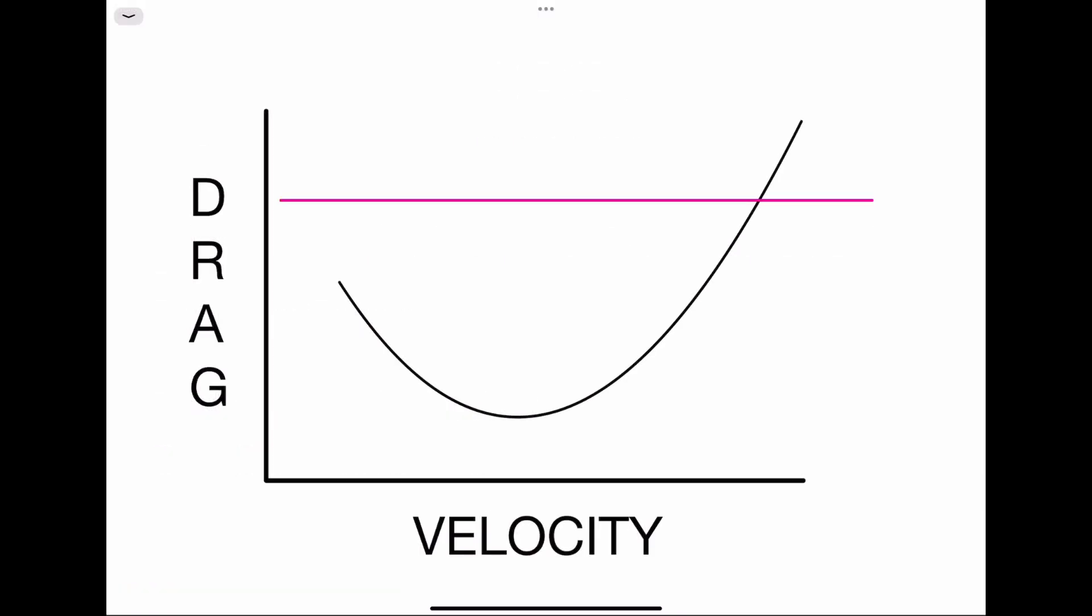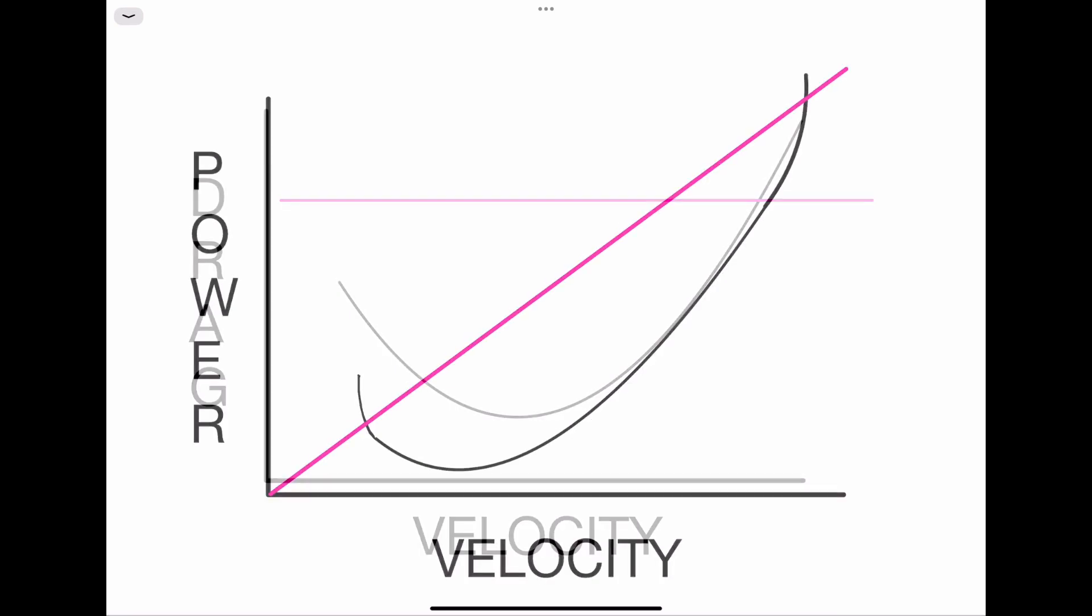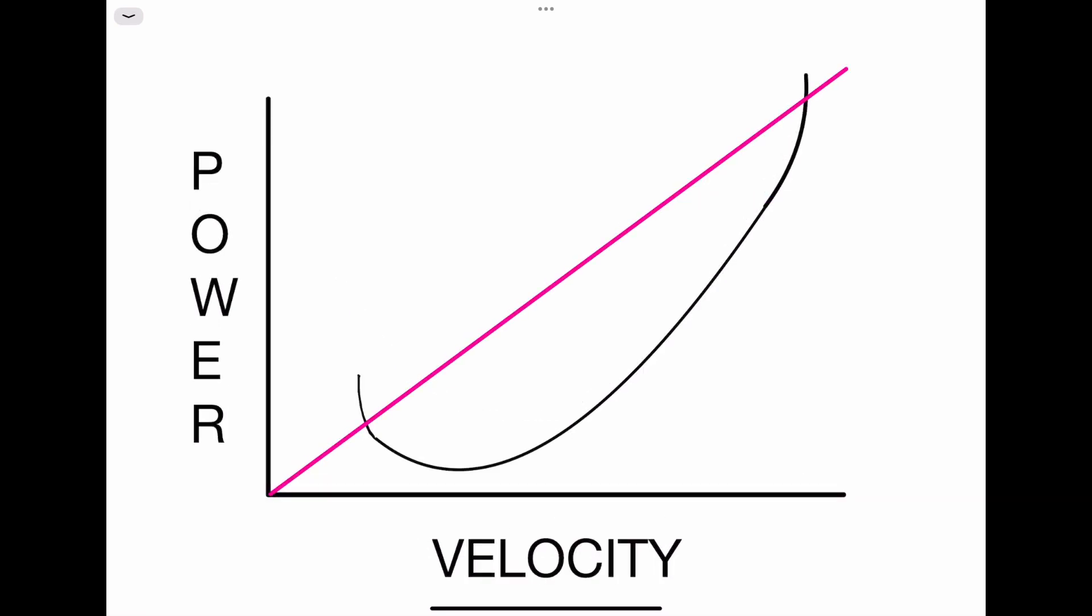This is a very basic drag curve. Drag on the y-axis, velocity in knots on the x-axis. You've all seen this before. The horizontal magenta line is your thrust available for a jet, not a propeller. This is the power curve. It's similar to the drag curve, but if you take a look at the y-axis, the units are different. Drag is in pounds, power is in watts or horsepower.